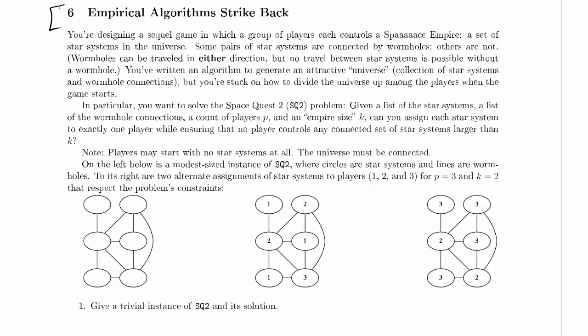Some pairs of star systems are connected by wormholes, others are not. Sounds like a graph. Wormholes can be traveled in either direction, but no travel between star systems is possible without a wormhole. So this is an undirected graph. The previous one was a directed graph.